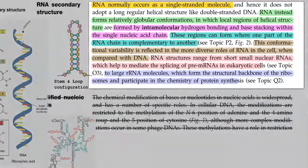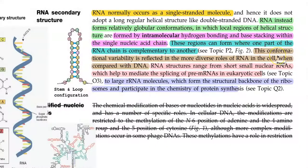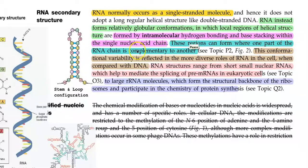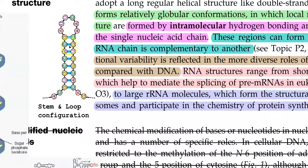Now we look at the points related to secondary structure formation. RNA normally occurs as a single stranded molecule, so it won't be like the helical structure of double stranded DNA. However, under certain conditions, RNA forms a relatively globular conformation in which local regions of helical structures are formed. A helical structure will be formed by intramolecular hydrogen bonding and base stacking within a single nucleic acid chain. The same chain has now formed into a globular structure with intramolecular hydrogen bonding.